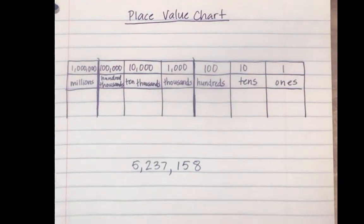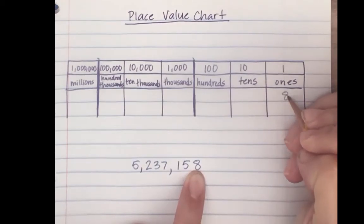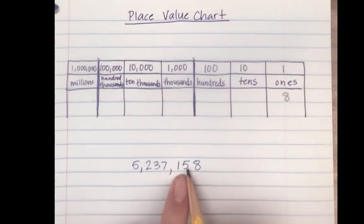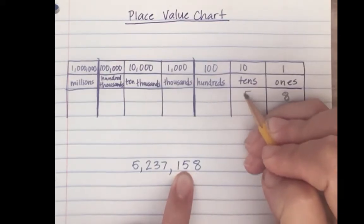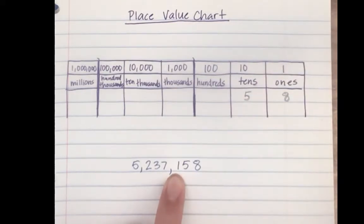I would say this eight is worth eight ones. This five is worth fifty, so that's equal to five tens. This one stands for one hundred.